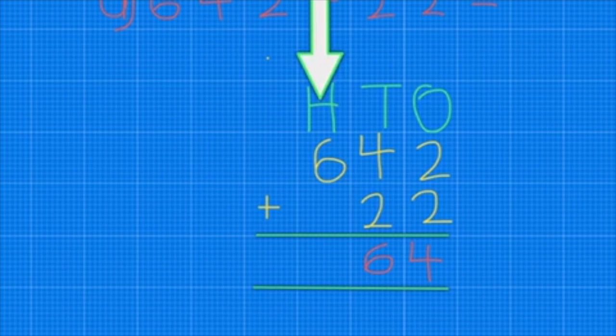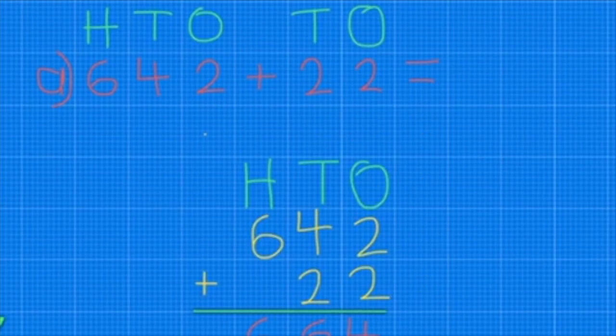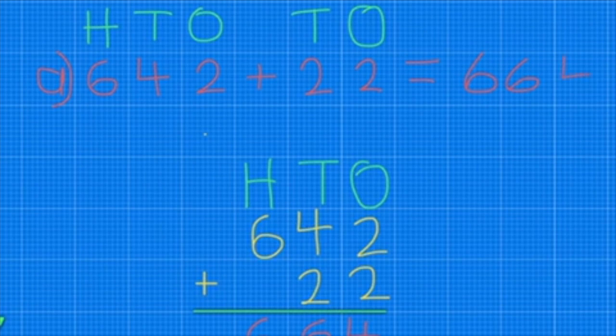So now I know the answer is 664, and that is as simple as that. It's column addition with no regrouping.